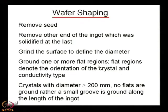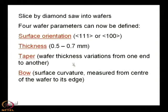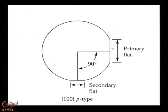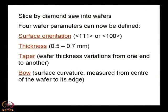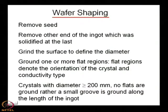Then grind one or more flat regions. Flat regions denote the orientation of the crystal and conductivity type. There is a primary flat and a secondary flat. Depending on the flat regions, you can determine whether the crystal is p-type or n-type, and whether the orientation is (100) or (111). By simply viewing the wafer, you can identify these properties without needing additional measurement.